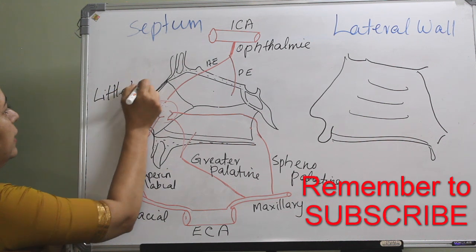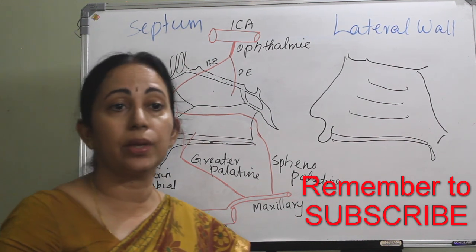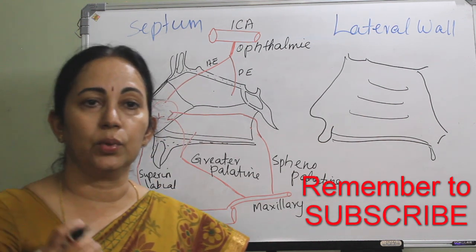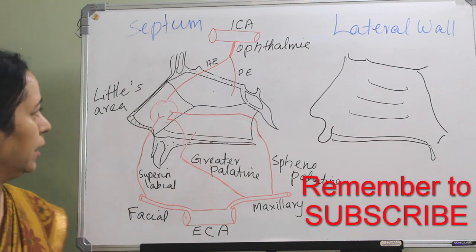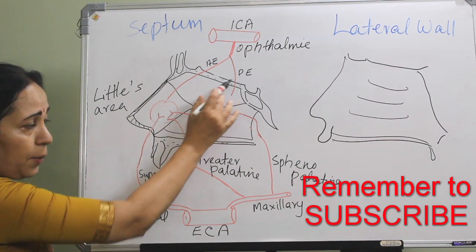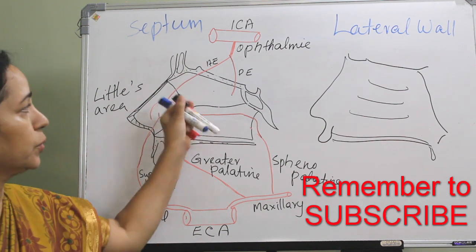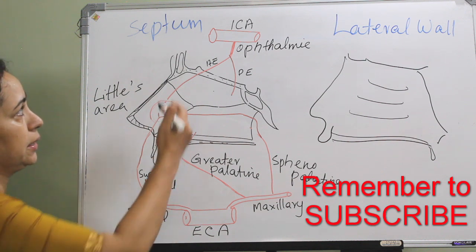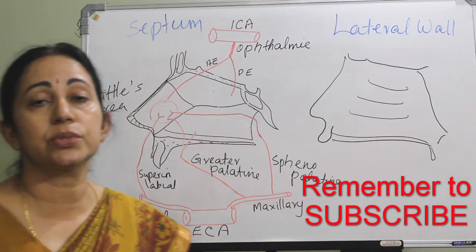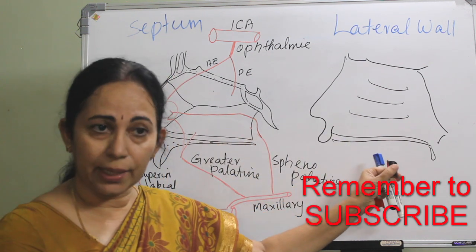Little's area is important and can be asked for undergraduates, including in the drawing labeling part. Little's area is the most common site of anterior epistaxis. And in Little's area there is no supply from the posterior ethmoid — only the four named branches are coming there. So it is from both the internal carotid and external carotid system, but without any anastomosis between them.